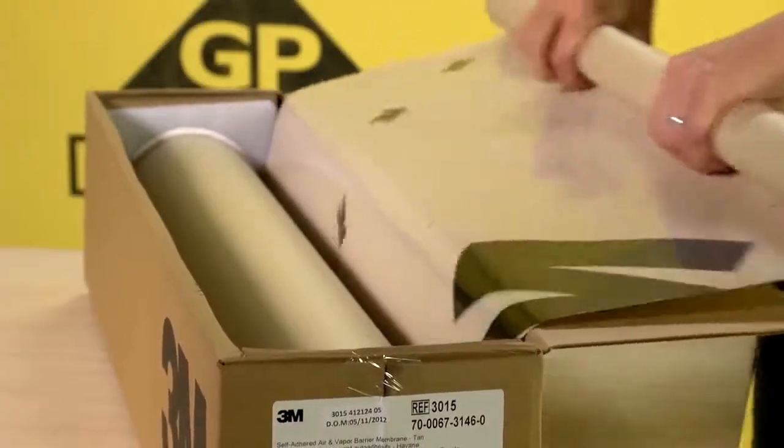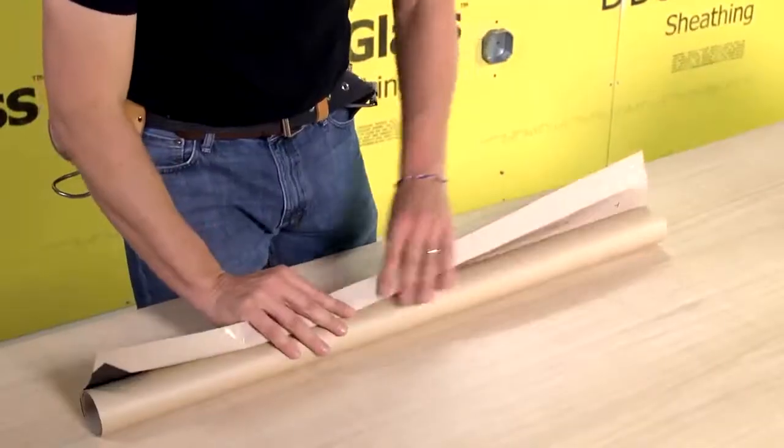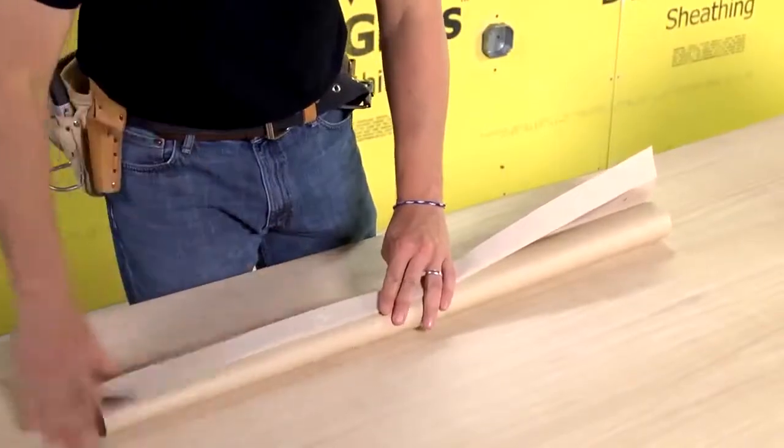A 6-inch grid on the membrane helps you measure the length of membrane that you need. Fold the right length out of the box and fold the membrane to set a crease in the release liner.